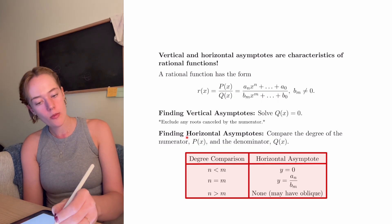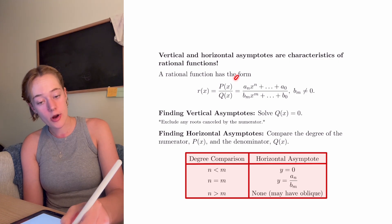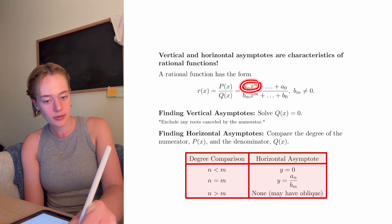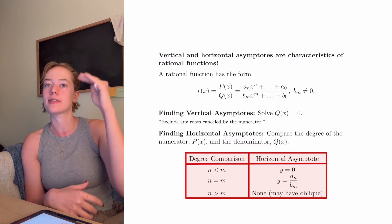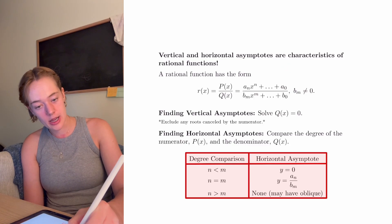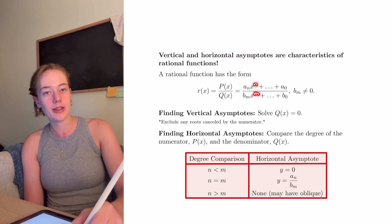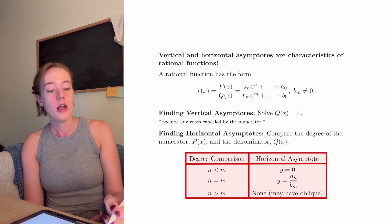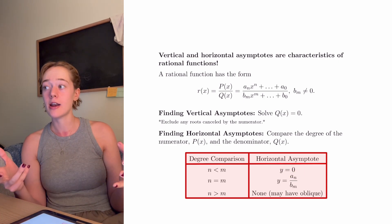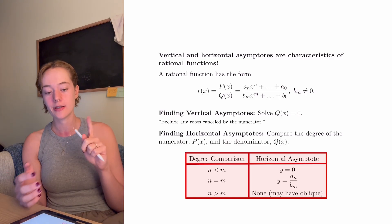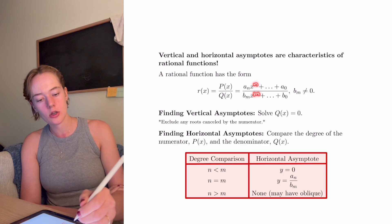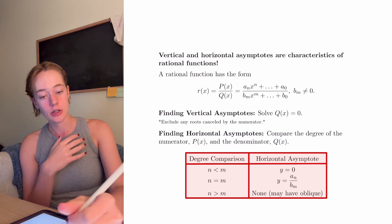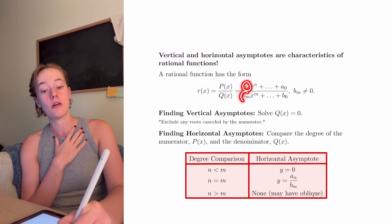Here's the key for finding horizontal asymptotes. We compare the degree of the numerator to the degree of the denominator — the degree being the term with the highest power. So n is the highest degree in our numerator, and m is the highest degree in our denominator. If the degree of the numerator is less than the degree of the denominator, our horizontal asymptote is y is equal to zero — just the x-axis. The second case: if the degree of the numerator equals the degree of the denominator, we take the coefficients of those highest-degree terms and divide them, giving us y is equal to a_n over b_n.